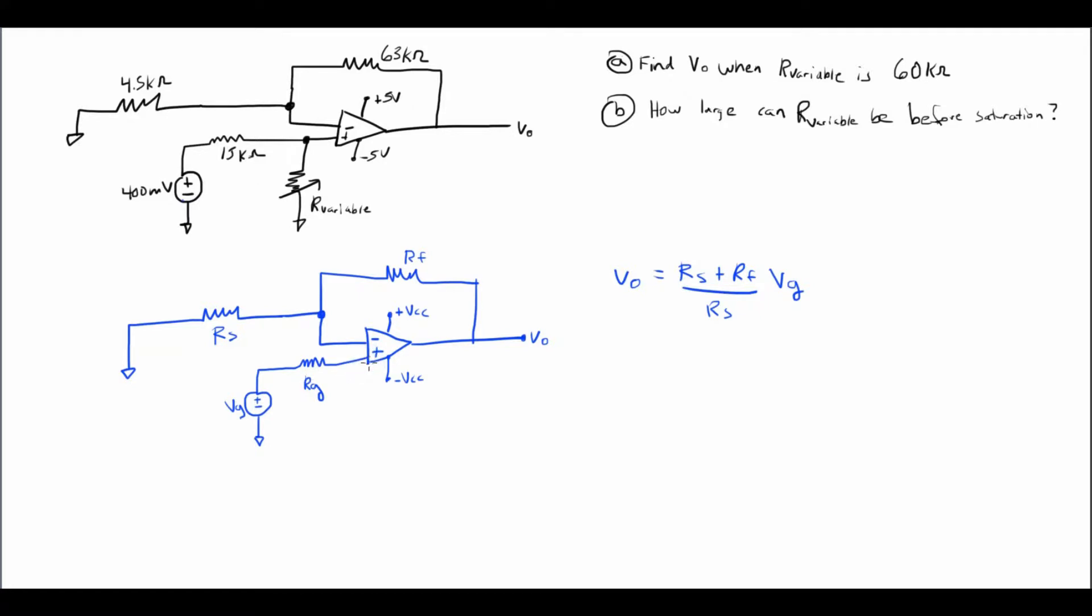And we know from our op-amp laws that both of these input currents can never be anything other than zero, and then also the positive voltage is equal to the negative voltage. How is that going to help us? It's really not, but the main thing to focus on here is that this is VG right here at the positive terminal.